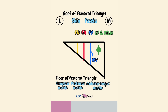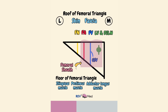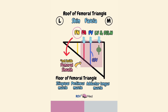Also remember this: the structures of the femoral triangle are covered by the femoral sheath. It covers the femoral artery, femoral vein, the empty space, and the lymph nodes. The femoral nerve is not inside the sheath.